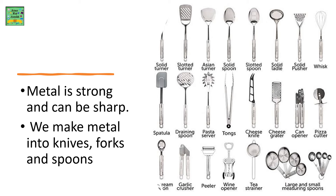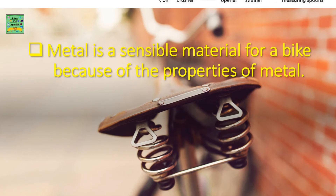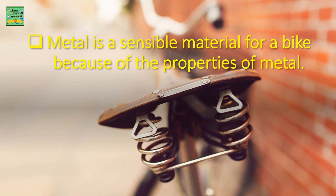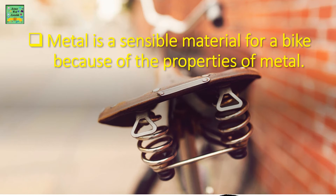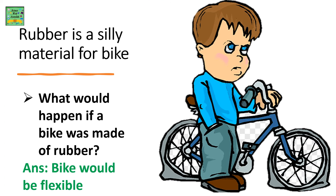Metal is strong and can be sharp — we can make metal into knives, forks, and spoons. Metal is a sensible material for a bike because of the properties of metals. Rubber is a silly material for a bike. What would happen if a bike was made of rubber? The bike would be flexible.